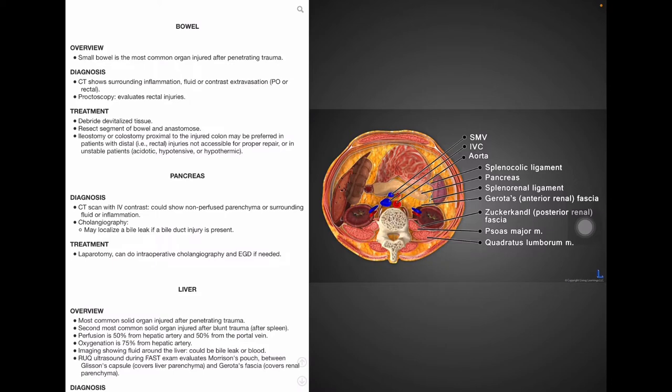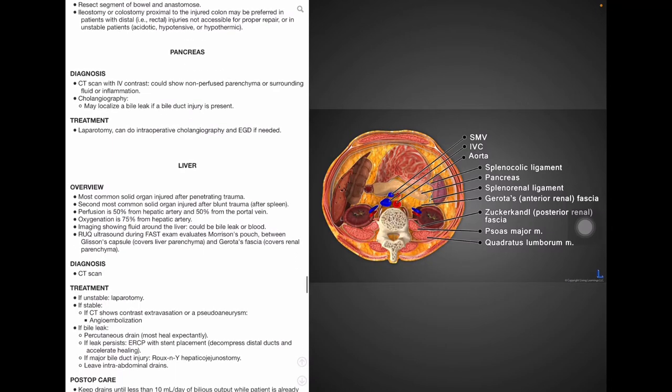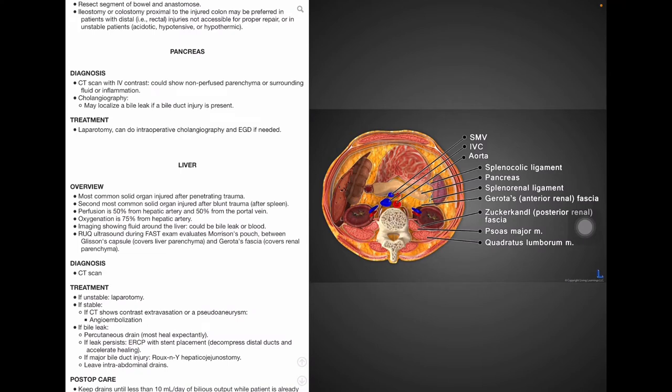Pancreatic trauma. To diagnose pancreatic trauma, CT with IV contrast is used to show non-perfused parenchyma or surrounding fluid and/or inflammation. A cholangiography may help to localize a bile leak if there is injury to the bile duct. Fortunately, though, most pancreatic injuries are treated without surgery. Treatment can include patient observation and, if necessary, a laparotomy, which is a surgical resection of the abdominal cavity, can be performed to make way for intraoperative cholangiography and upper endoscopy or esophagogastroduodenoscopy.